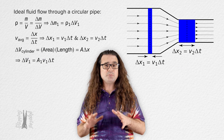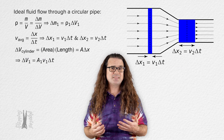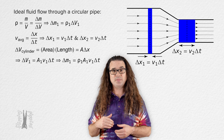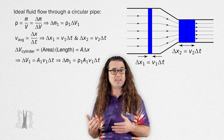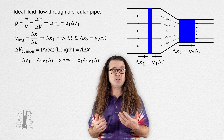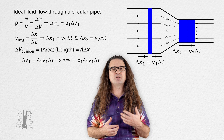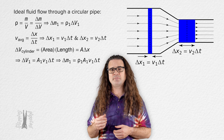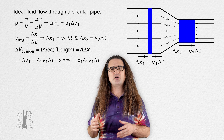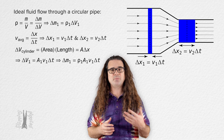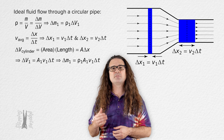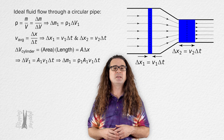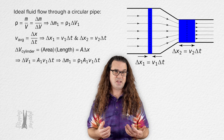Substituting back into our equation for mass, we get that delta m sub 1 — the amount of mass which passes through plane 1 during change in time delta t — equals the density of the fluid at plane 1 times the cross-sectional area of plane 1 times the velocity of the fluid through plane 1 times change in time.